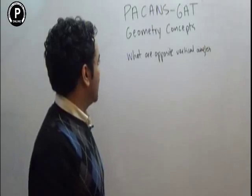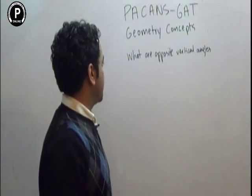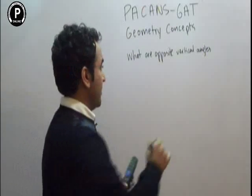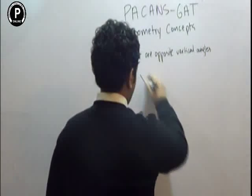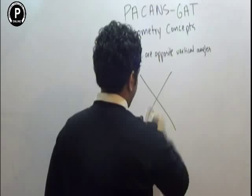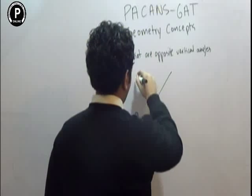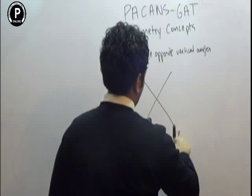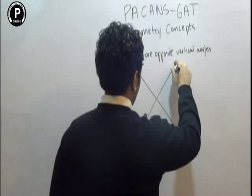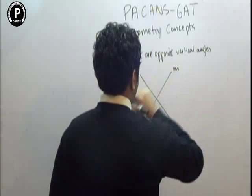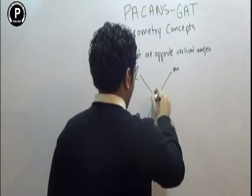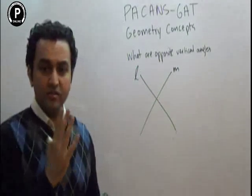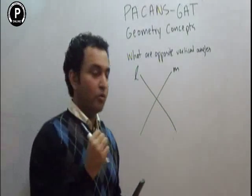Welcome to Peckin's Geometry Concepts. What are opposite vertical angles? If I look at two intersecting lines — these are two intersecting lines, they are cutting each other — I would be able to see that they are going to be forming four angles.